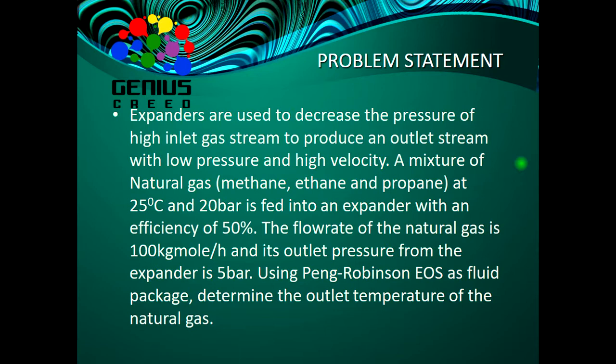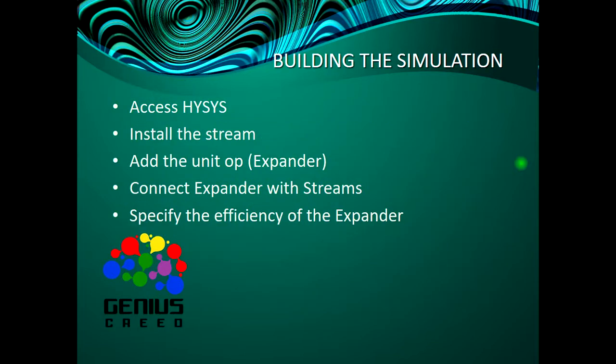Using the Peng-Robinson equation of state as the fluid package, determine the outlet temperature of the natural gas. This is how we build the simulation: we access HYSIS, install the stream, add the unit, connect the expander to the stream, and specify the efficiency of the expander.